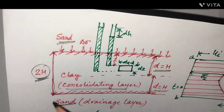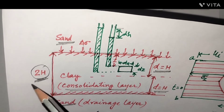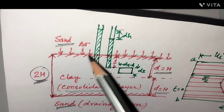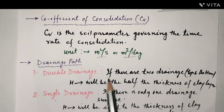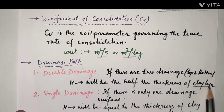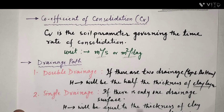In single drainage, a water particle must travel the full thickness of the clay layer — that is 2H — since dissipation occurs from only one side. So for double drainage (top and bottom), the drainage path is half the thickness; for single drainage (one drainage surface only), it equals the full thickness of the clay layer.